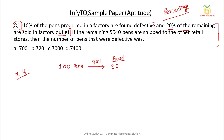Now, 20% of the remaining pens are sold in the factory outlet. Since 10% were defective, 90 pens remain good. If you sell 20% in the factory outlet, then 80% will remain with you. So 80% of 90 gives you 72 pens remaining.